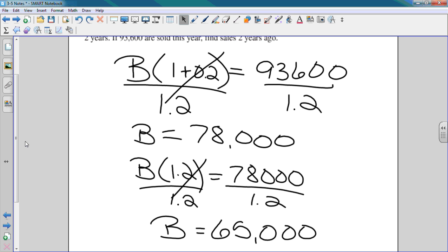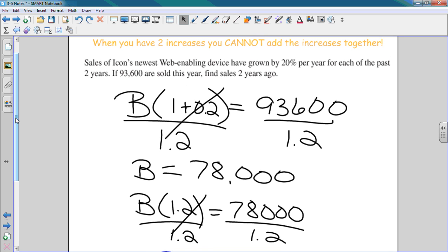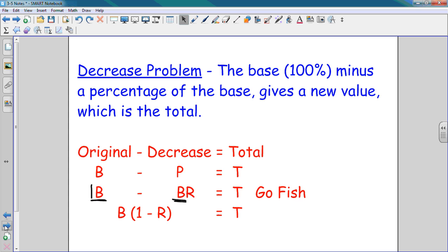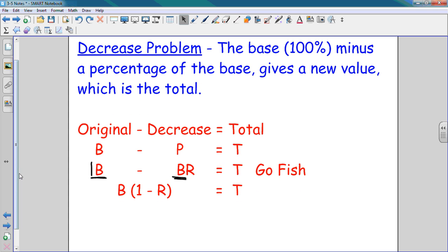You'd have to do it twice, not a two-part answer, because they said find sales two years ago. So you first have to find one year ago, then you go back two years. Let's talk about decrease. If those were increase, now let's do some decrease problems.